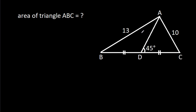In this video, we have been given that AB is 13, AC is 10, BD is equal to CD, and angle ADC is 45 degrees. Then we have to find the area of triangle ABC.